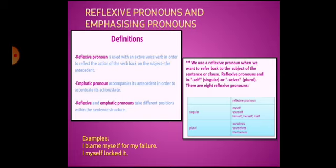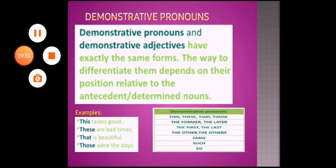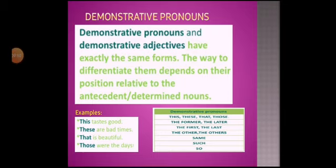A pronoun used to convey emphasis is called an emphasizing pronoun. For example, 'I myself locked it' — here 'myself' is an emphasizing pronoun. Reflexive and emphasizing pronouns take different positions within the sentence structure. Demonstrative pronouns — this, these, that, those — are the pointing pronouns. Examples: 'This tastes good', 'These are bad times', 'That is beautiful', 'Those were the days'. This, these, that, those are demonstrative pronouns.